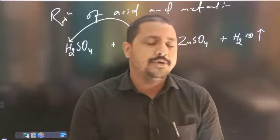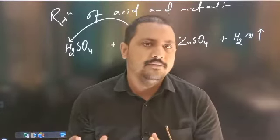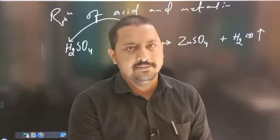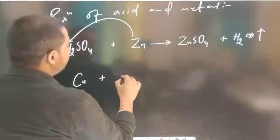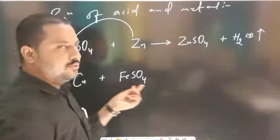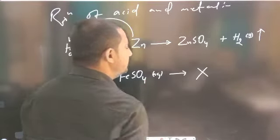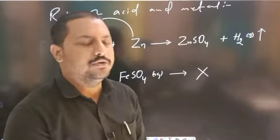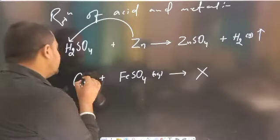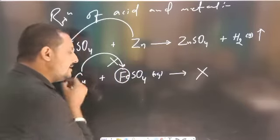Lekin aapko sabse main important baat yeh hai — displacement reaction tabhi hogi jab ek higher reactive element apne se lower reactive element ko displace kare. Dekhiye, ye wali reaction possible nahi hai — jaise copper ko agar ferrous sulfate ke solution mein daal diya jaaye, copper metal ke kuch tukde ferrous sulfate ke solution mein daal diye jaayein, to yahan koi bhi reaction nahi hogi. Kyunki copper ki jo reactivity hai, woh iron se kam hai — to woh iron ko displace nahin kar sakta hai.